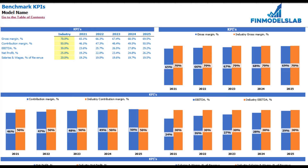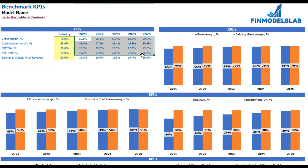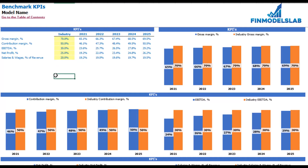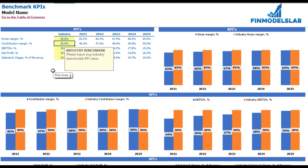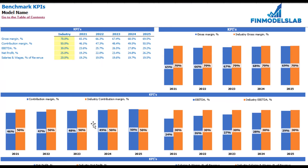On the benchmarks KPI tab, you can compare your financial outputs with industry benchmarks. There are five benchmarks: gross margin, contribution margin, net profit, EBITDA, and salaries and wages as a percentage of revenue. The model-calculated values appear alongside yellow cells where you input your industry benchmarks — for example, 85% gross margin for your industry and country. The same comparison is shown in chart form, with orange columns for industry benchmarks and blue columns for the model values.